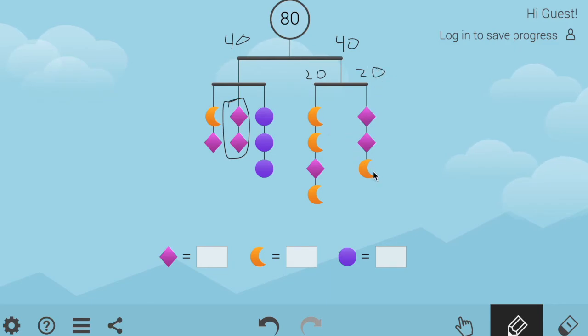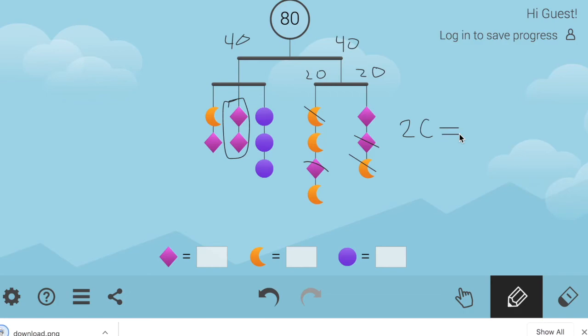Because if I scratch moon out and I scratch one diamond out, I see that two moons balance with one diamond. Two moons equals one diamond.